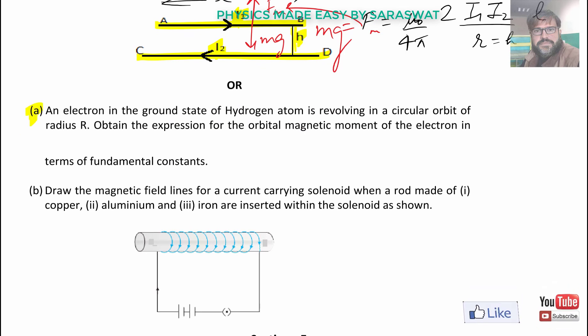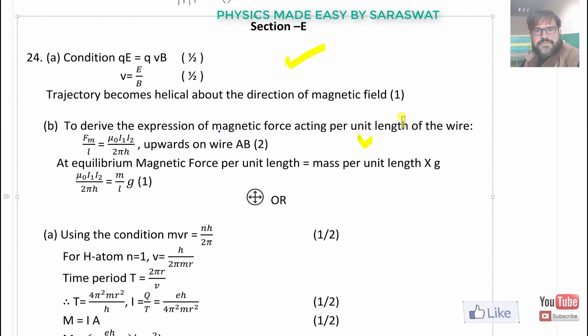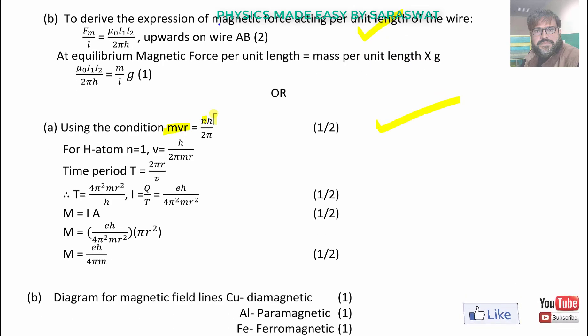An electron is revolving in a circular orbit of radius R. Obtain the expression for the orbital magnetic moment of the electron in terms of fundamental constants. The angular momentum MVR = nh/2π. For a hydrogen atom n = 1. Velocity can be written as h/2πMR. Time period is 2πR/V. Current is charge upon time. The magnetic moment comes out to be eh/4πM that is also called as μ₀ or Bohr magneton.